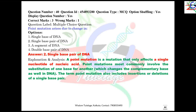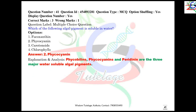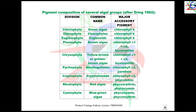Question number 40: point mutation arises due to a change in a single base pair of DNA. Question number 41: which algal pigment is soluble in water? It is phycocyanin. The entire list of pigments is provided here.